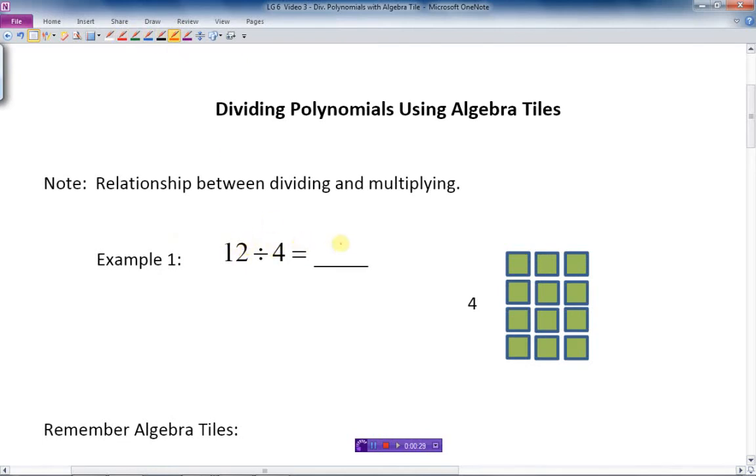12 divided by 4, which of course is 3. How do we check that? How do we know that 3 is the correct answer? If I wanted to check my work, what I'd do is this: I would just actually go backwards here. I'd multiply my answer times the 4 and see if I get the first number, 12.